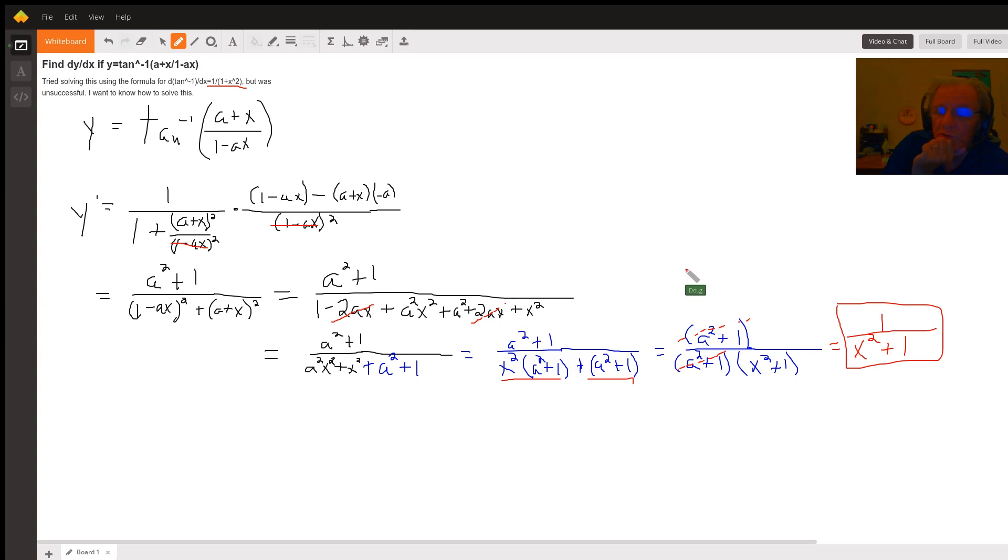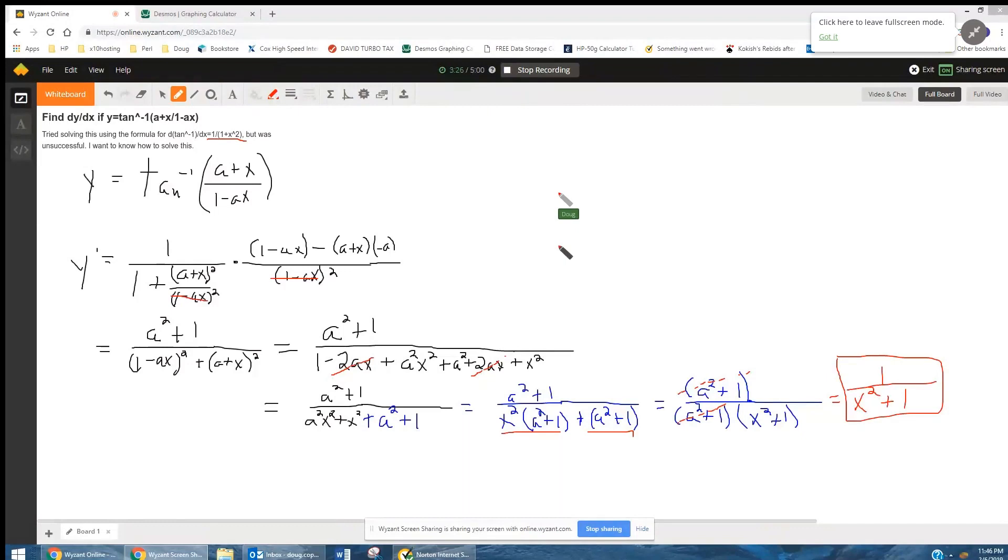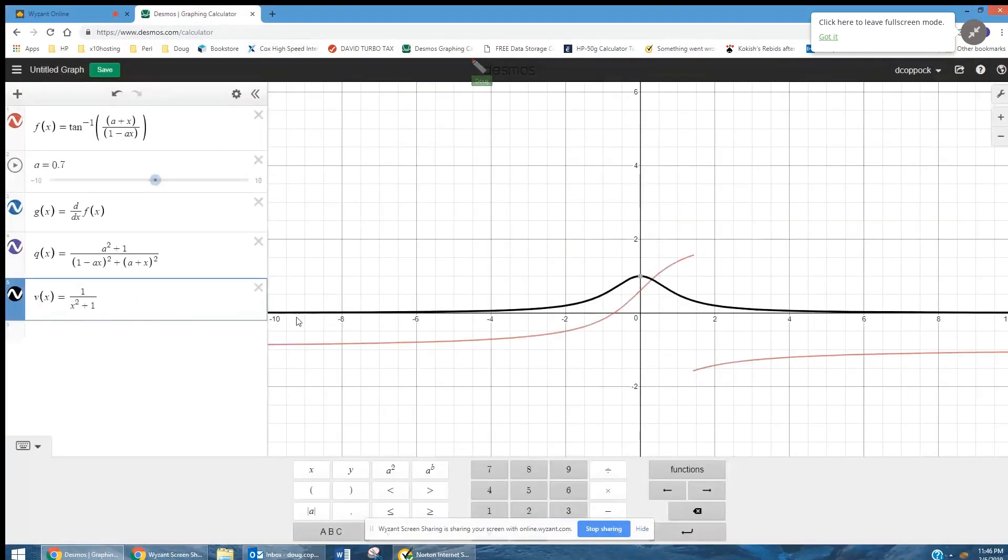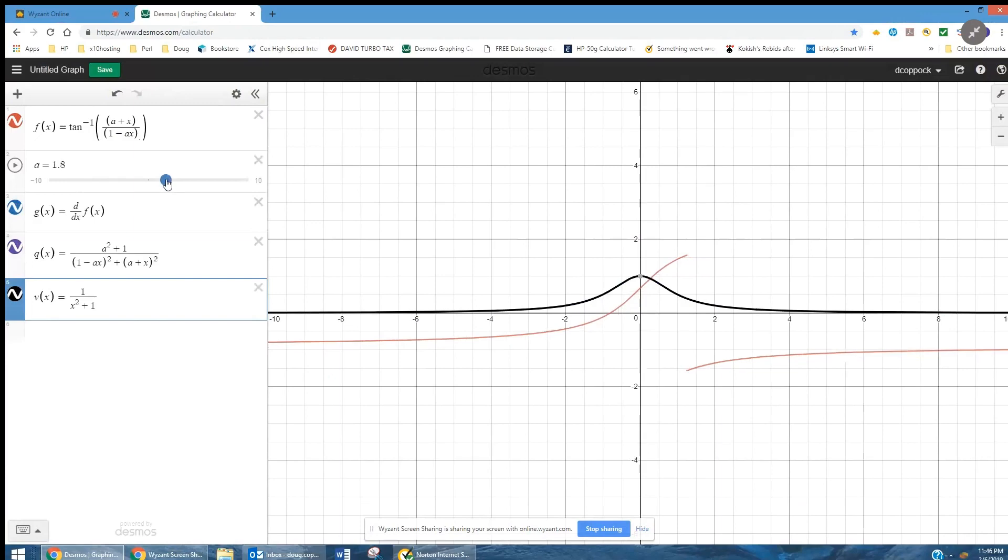Now, real quickly, I'm going to share my screen and show you how I can convince myself that this answer is correct. I've graphed the function f of x equals the inverse tangent of a plus x over 1 minus ax. And a is a constant, so I can create a slider. And I don't have to show the graph of the tangent function.